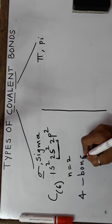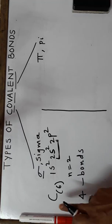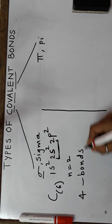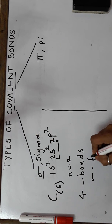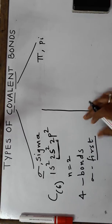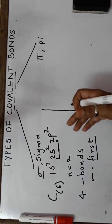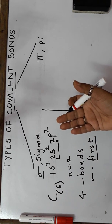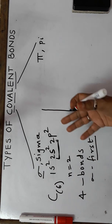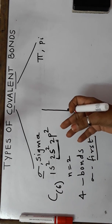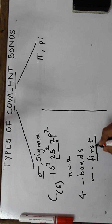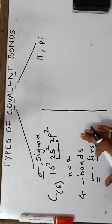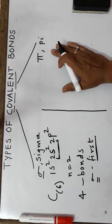The first bond which it is going to make is going to be a sigma bond — remember that. The sigma bond is generally the first bond which is formed. After that, if an atom can make more bonds — like carbon can, hydrogen cannot, oxygen can — only those atoms which can make more bonds will first go for a sigma bond and then go for a pi bond. First they'll make a strong bond, then they'll go for a weaker bond.